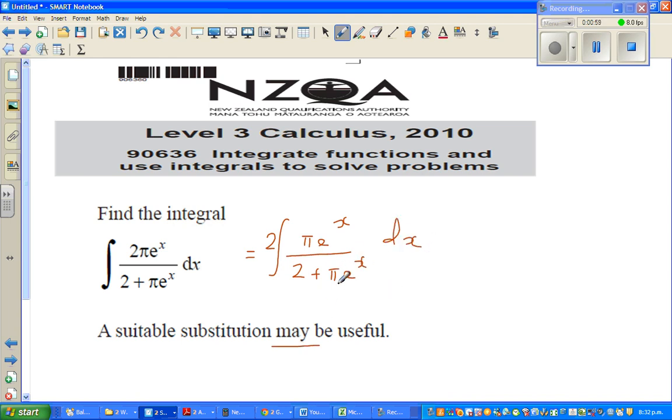As a calculus student, you should see a relation between the denominator and the numerator. A good substitution would generally be the denominator. So let u equal the denominator, which is 2 + πe^x.